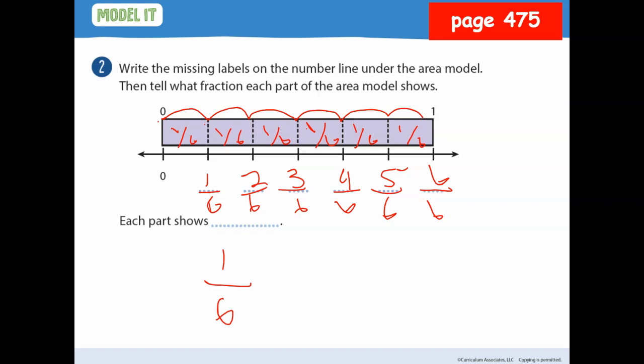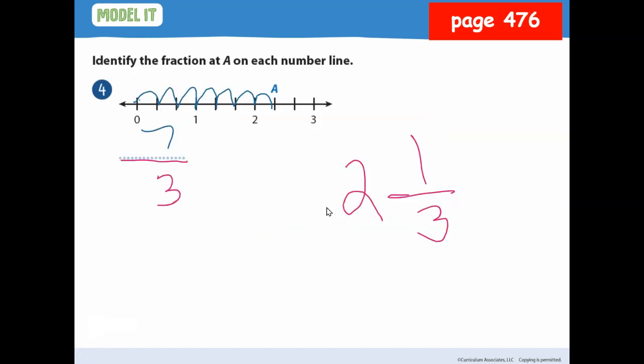However, if I highlight this, see, I have how much? Three sixths, right? Look, three sixths, like that. If I highlight this, how much do I have? Five sixths. If I highlight this, two sixths. Four sixths. If I highlight this, four sixths.